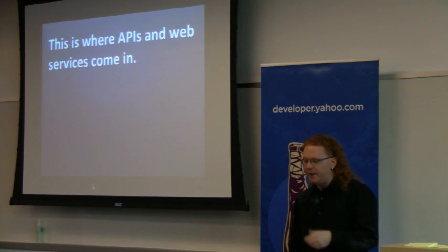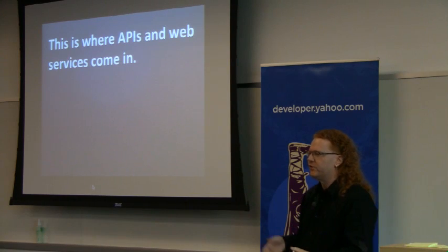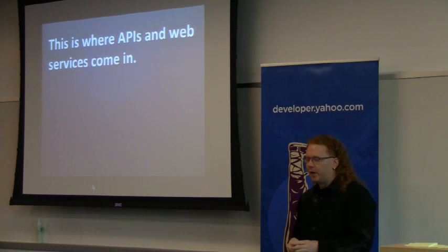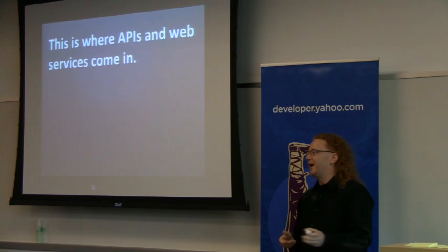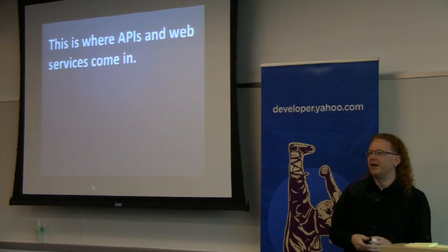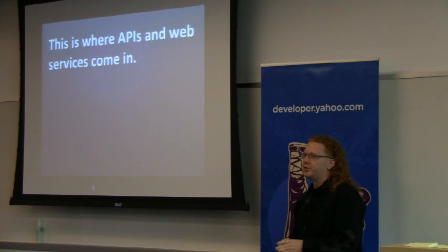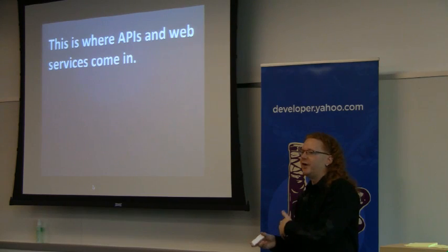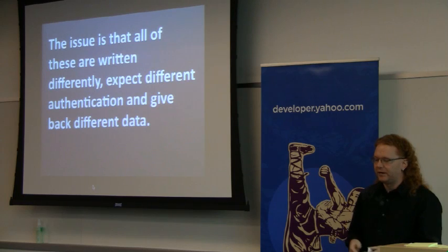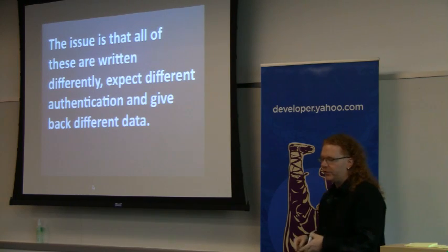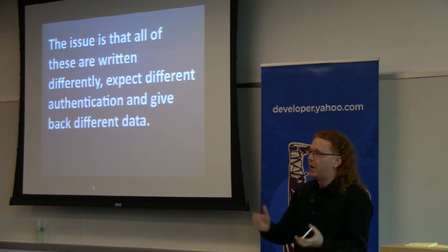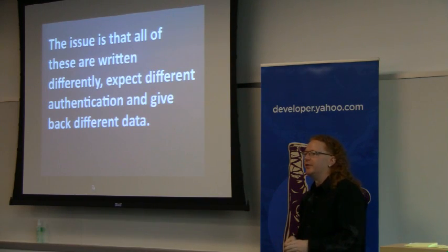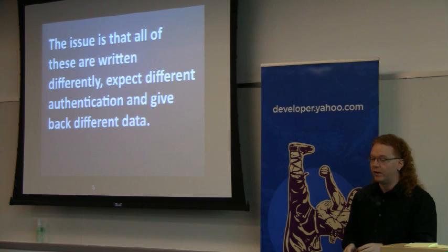APIs and web services — there are about 4,470 of them on the programmable web right now. The problem is all of them are written by developers, and every developer thought they had the best way to build an API, the best authentication, the best way to get information out. So all of them are completely different. We spend most of our time reading documentation that normally doesn't exist, and then we don't even get back the data we want. They give back different data even in interesting formats — the main government data format is RDF and SPARQL, which I hadn't even touched since 1997. This is why we built YQL.